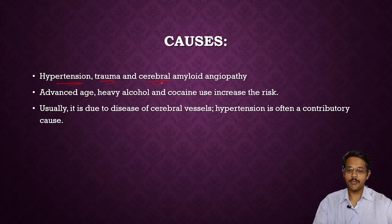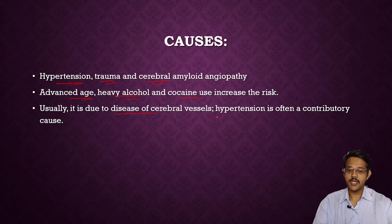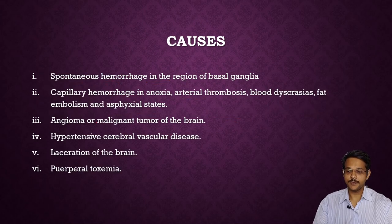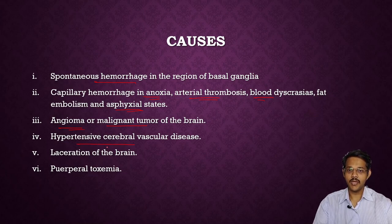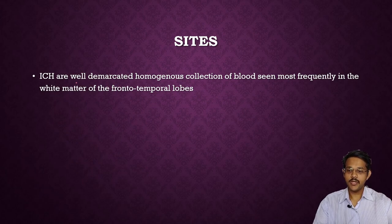Causes of intracerebral hemorrhage include hypertension, trauma, cerebral amyloid angiopathy, advanced stage heavy alcohol and cocaine use (which increase risk). It is also due to diseases of cerebral vessels. Spontaneous causes include hemorrhage in the region of basal ganglia, capillary hemorrhage in anoxia, arterial thrombosis, blood dyscrasias, fat embolism, anoxic states leading to smaller hemorrhages due to rupture of small vessels, angioma or vascular tumor, hypertensive cerebrovascular disease, laceration of the brain, and peripheral toxemia.